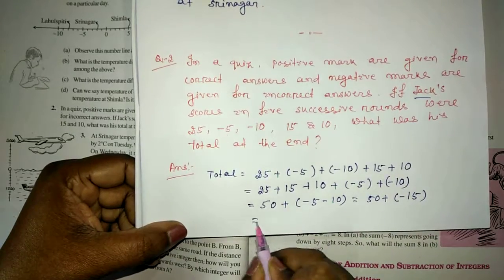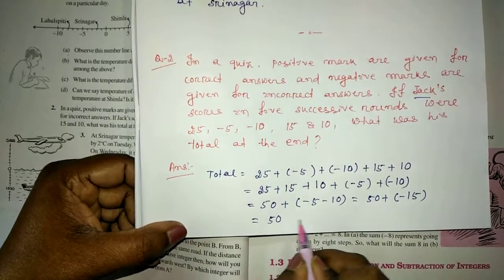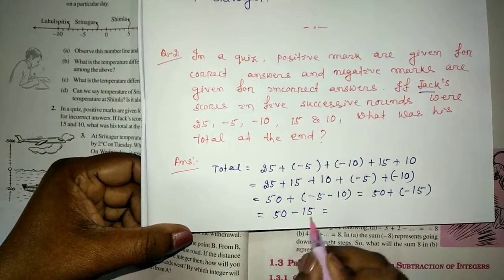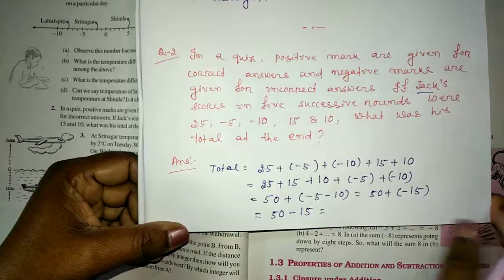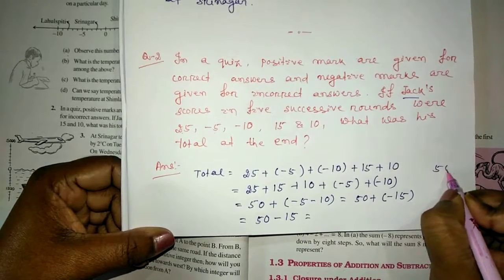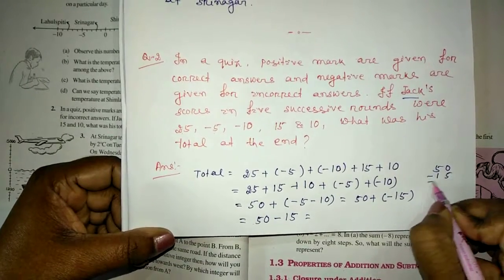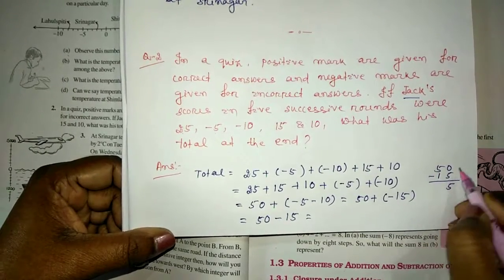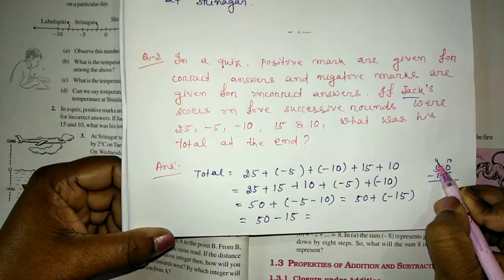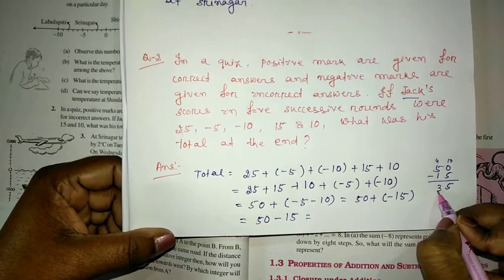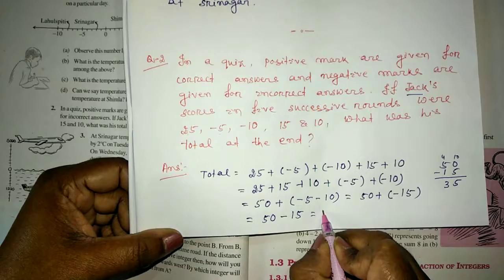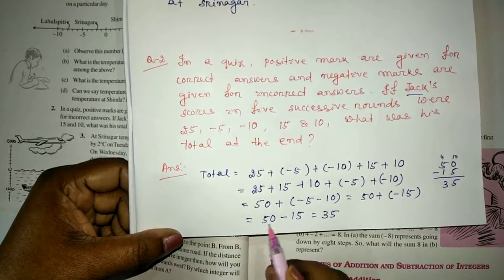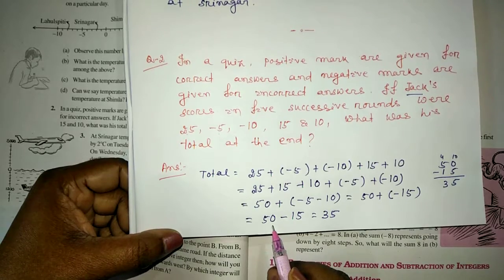Here it will be 50 minus 15. We will subtract it. That is 50 minus 15. Here it is 5, here it is 10, then it is 4, 3, 35. And the integer will be positive as the greater number is a positive integer.